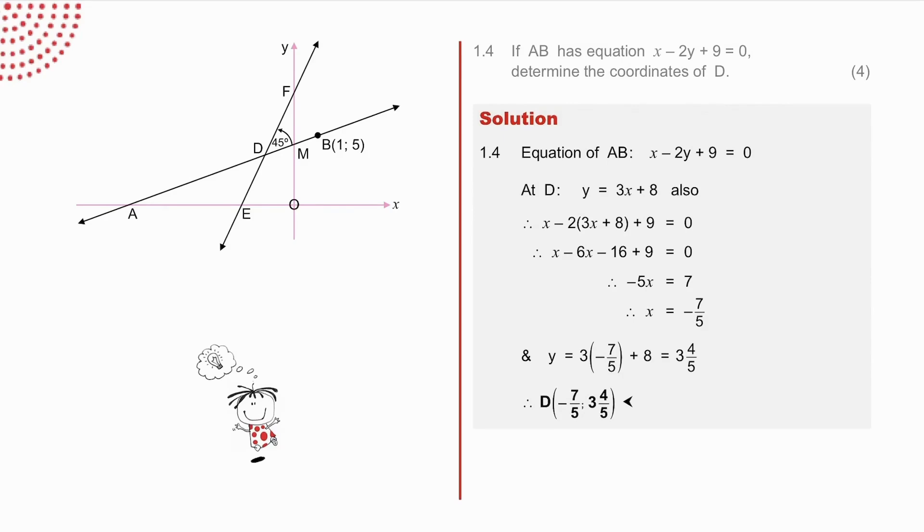This equation is in general form and is equivalent to the equation in standard form in the previous question for this line AB. The coordinates of D as the point of intersection of these two graphs. It obeys both equations, the equation of AB and the equation of EF. There is no need to convert this equation into the standard form. Use it as it is. Just substitute 3x plus 8 from this equation into the y of this equation, and we then solve for x. Check your answer.